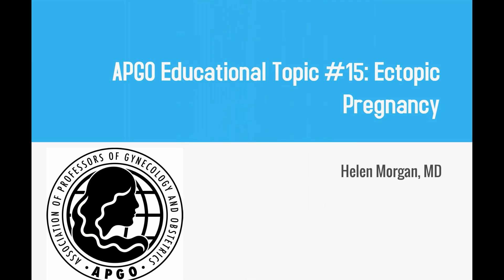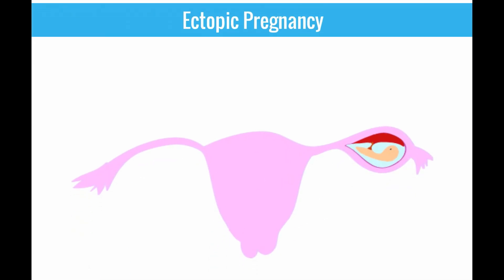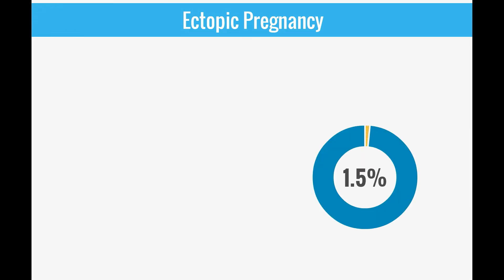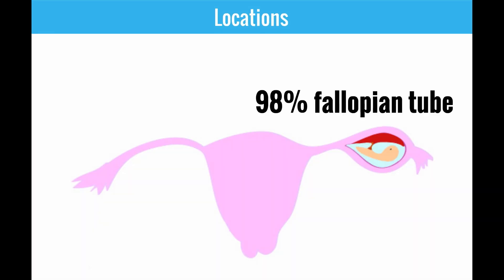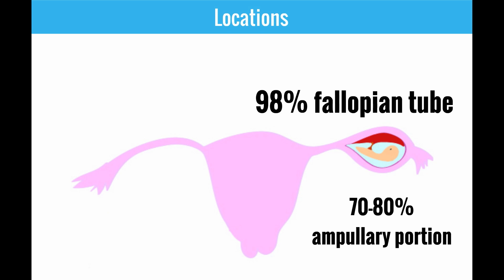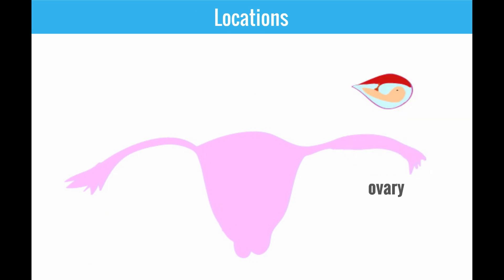APCO educational topic 15: ectopic pregnancy. Ectopic pregnancies are abnormal implantations outside of the endometrial cavity. They account for 1.5 percent of reported pregnancies in the United States. 98 percent of ectopic pregnancies are in the fallopian tube, with 70 to 80 percent located in the ampullary portion. Less common locations include the ovary, cervix, and abdomen.